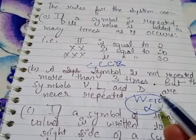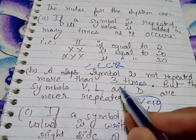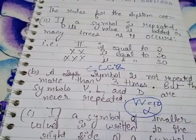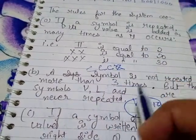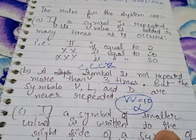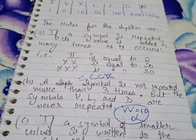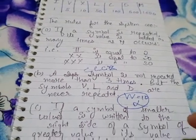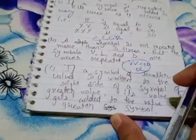So a symbol can be repeated only three times, and V, L, D can never be repeated. The first and second rules I suppose are now clear. We will come to the third one.